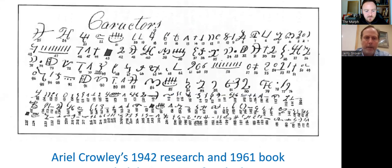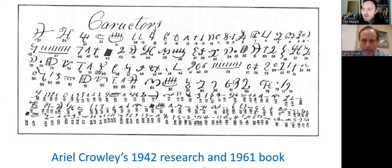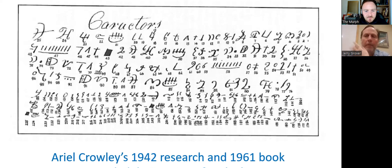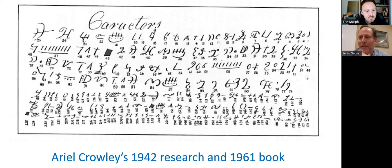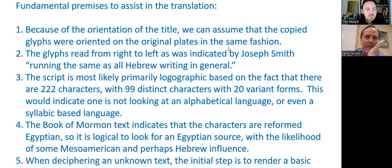Ariel Crowley looked at this early on — 1942 — and assigned numbers to each of the glyphs. I just used his numbering conventions, prefixing them with 'C-dash.' He was an LDS attorney who ended up being a judge in Idaho. Neil mentioned he worked with Egyptologists to get his source material, mostly demotic. Crowley goes up to 96 and then jumps to 100, so there are four numbers missing — I don't know what happened there.